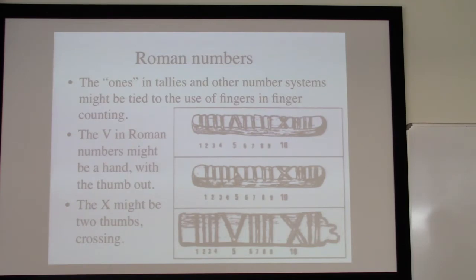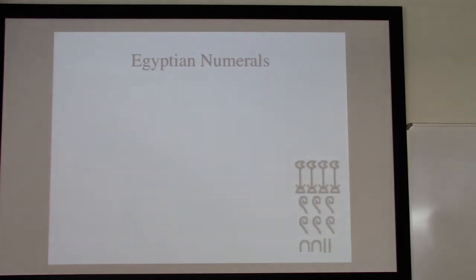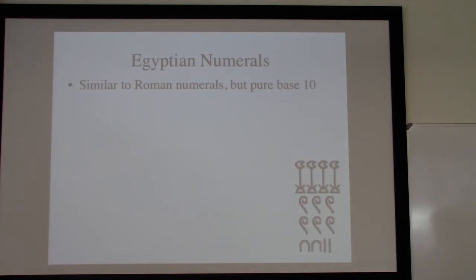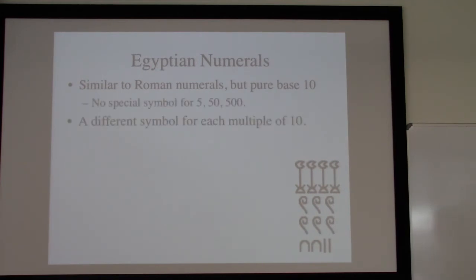Let's go to Egyptian numerals. The Roman numerals are a system I'm assuming people are reasonably familiar with. Egyptian numerals are fairly similar to Roman numerals, but they're a pure base 10 — no Vs, Ls, or Ds. We get a different symbol for each multiple of 10, and we just kind of clump things together. It doesn't really matter what the ordering is.